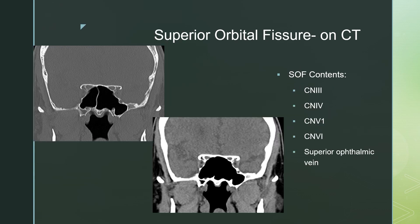The superior orbital fissure transmits cranial nerves 3, 4, V1, and 6, as well as the superior ophthalmic vein. You're looking below the optic canal — it's inferior and slightly lateral. Here it is on the bone windows, and here it is on the soft tissue windows, lateral to the sphenoid sinus.